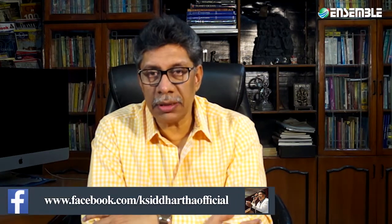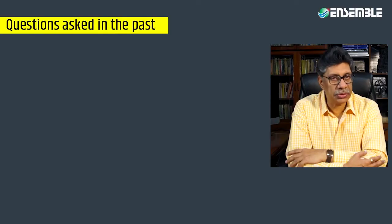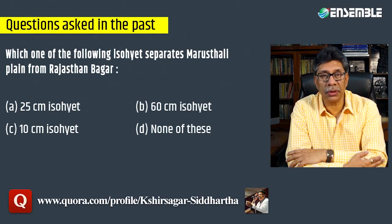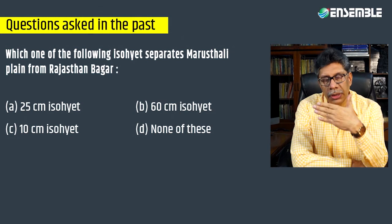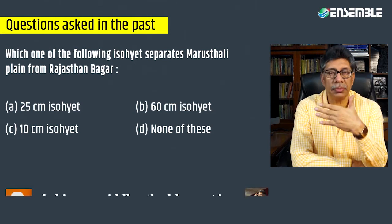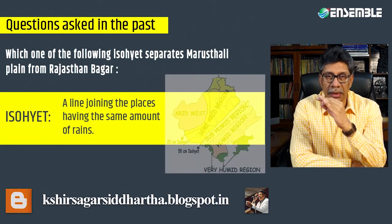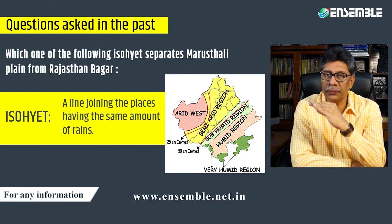The desert region has been particularly significant in the light of some of the questions that have been framed out of it. One of these questions is: which of the following isohyet separates Marustari from Rajasthan Bagar? Marustari is the desert proper, and the question is about which isohyet — the lines joining places having the same amount of rainfall — separates Marustari from Rajasthan Bagar.